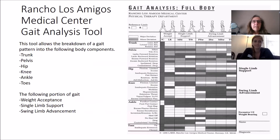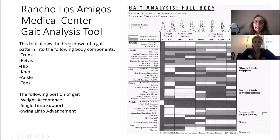What we're going to use today is the Rancho Los Amigos Medical Center Gait Analysis Tool. This is a common tool that we like to introduce to students. This tool allows the breakdown of a gait pattern into the following body components: trunk, pelvis, hip, knee, ankle, and toes. Within each of those components, we can further break down the walking pattern into weight acceptance, single limb support, and swing limb advancement.